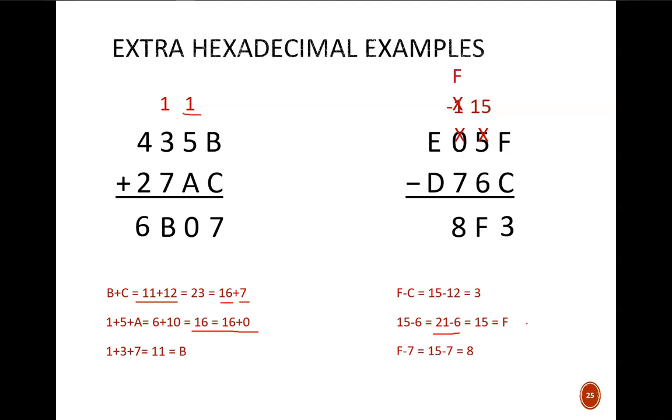To make that carry happen we borrowed a 1 from this 0. So it temporarily holds a negative 1 until we carry in 16 to it from the next column. Negative 1 plus 16 leaves us with 15 up top. Then 15 minus 7 gives 8. Finally the E had 1 carried out from it leaving D. Then D minus D gives 0 and the subtraction is complete.